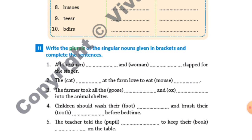Second one: 'The ___ [cat] at the farm love to eat ___.' Plural of cat is 'cats', and the answer for mouse is 'mice'. Third: 'The farmer took all the ___ [goose] and ___ [ox] into the animal shelter.' Answers are 'geese' and 'oxen'. Fourth: 'Children should wash their ___ [foot] — feet — and brush their ___ [tooth] — teeth — before bed time'.